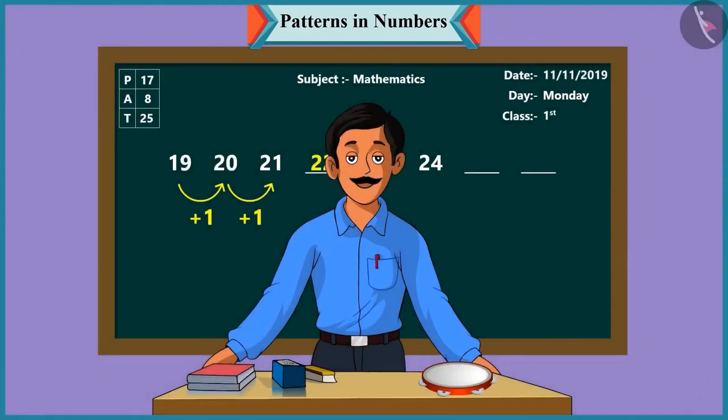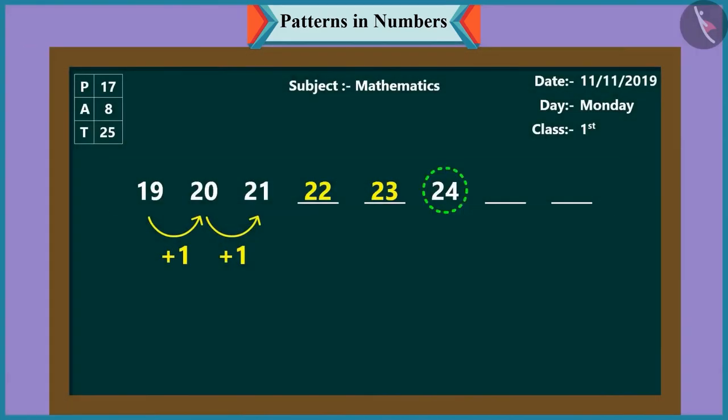So, Chutki, you tell me what comes next in this pattern. Hmm, after twenty-one, will come twenty-two and then twenty-three. Oh, wow. Well done, Chutki.